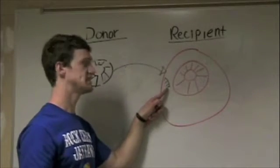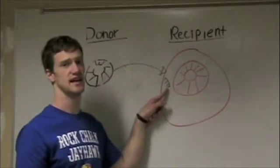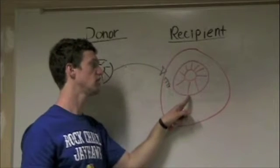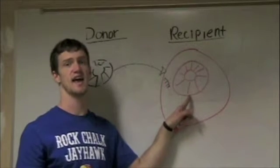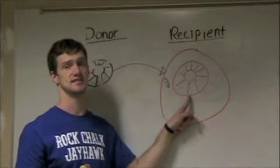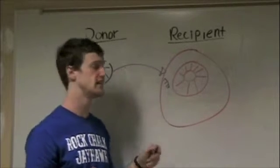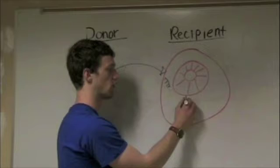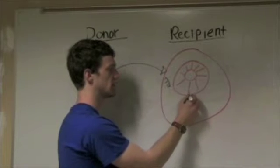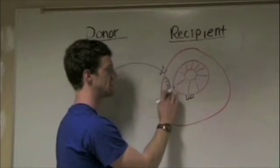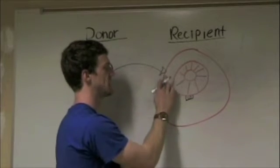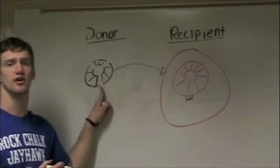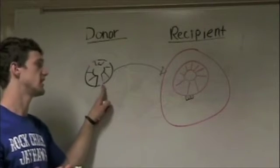These fragmented pieces of DNA can then align along the recipient cell's DNA at a specific point called the oriC. At the oriC, we have our tiny sequence of DNA from the original donor bacterial cell.